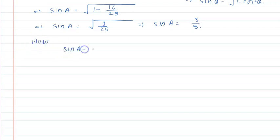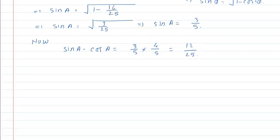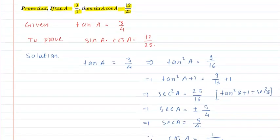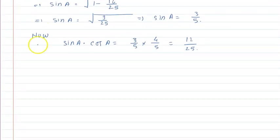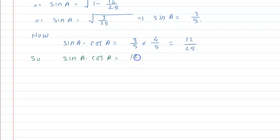Now, sin A into cos A is equal to 3/5 into 4/5, which is equal to 12/25. Let us cross check — yes, 12/25 is what we needed to prove. So, sin A into cos A is equal to 12/25. Hence proved. I hope you understood this solution, thank you.